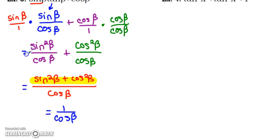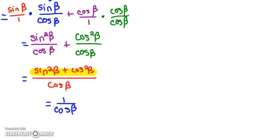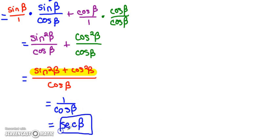So sine squared beta plus cosine squared beta equals one, leaving us with one over cosine of beta. We don't want to leave it as a fraction — we can use the reciprocal identity: one over cosine is secant. So our final answer is the secant of beta.